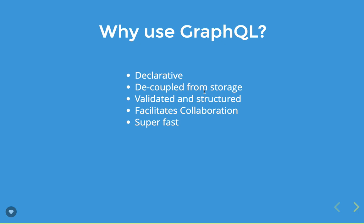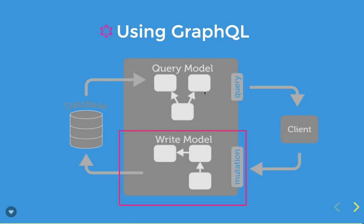Why use GraphQL? First, it's decoupled from storage, it's validated and structured, and it's super fast because it enables data aggregation. You don't need to call three different APIs to fetch data — you make one API call with an aggregated GraphQL query and get the response. It's useful for low-bandwidth networks where you only need required data. You get exactly what you want, nothing more, nothing less, all in a single request.